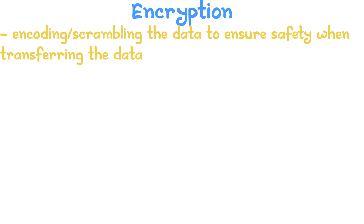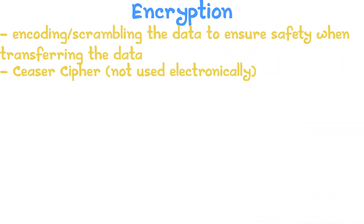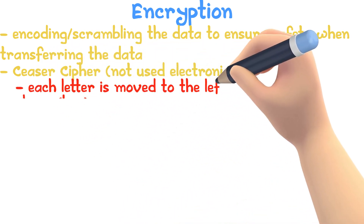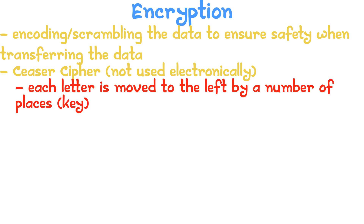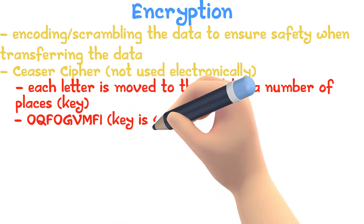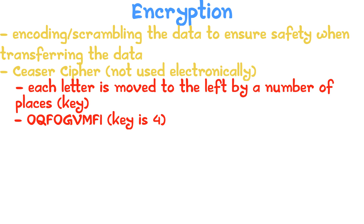Let's take a look at five encryption methods. Caesar cipher: this is a common but not that efficient encryption method. Each letter is moved to the left by a number of places. The number of places moved is called the key because it is the key to decoding the data. For example, here's a message with the key 4 — can you figure out what it says?